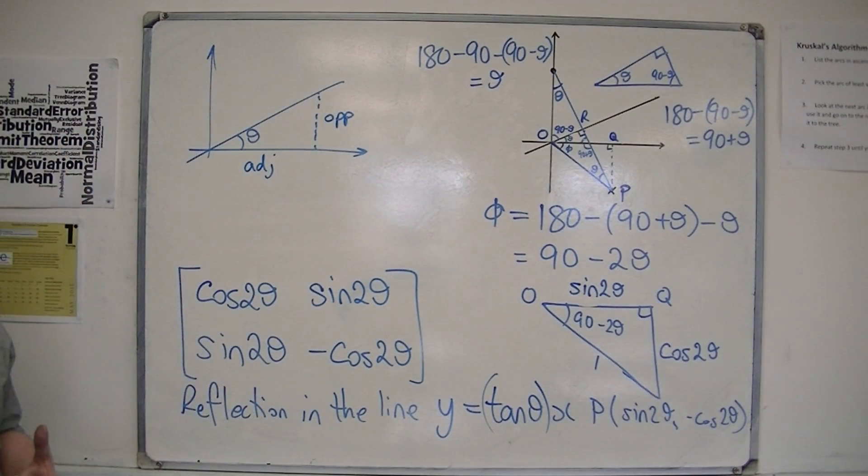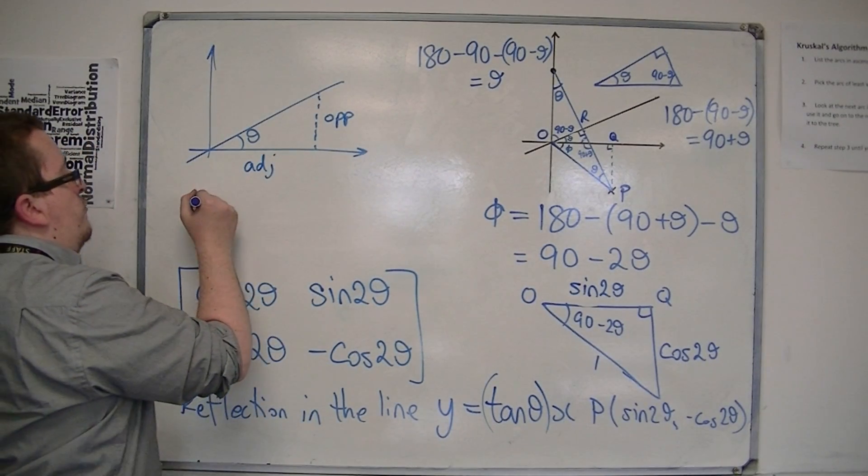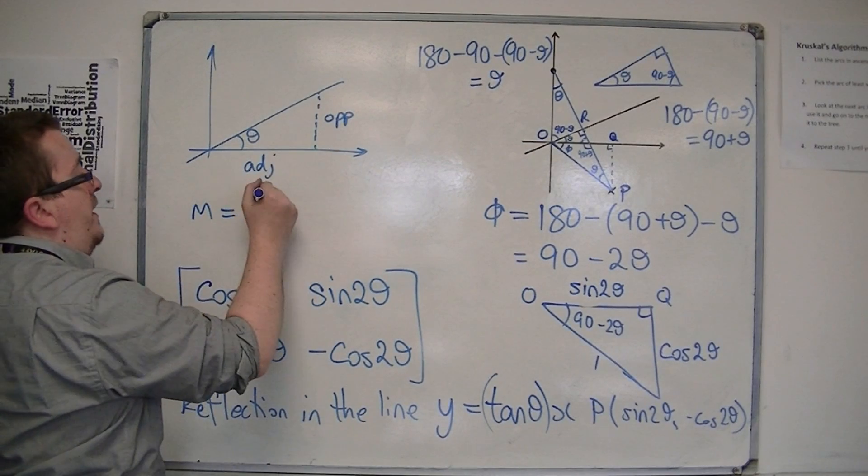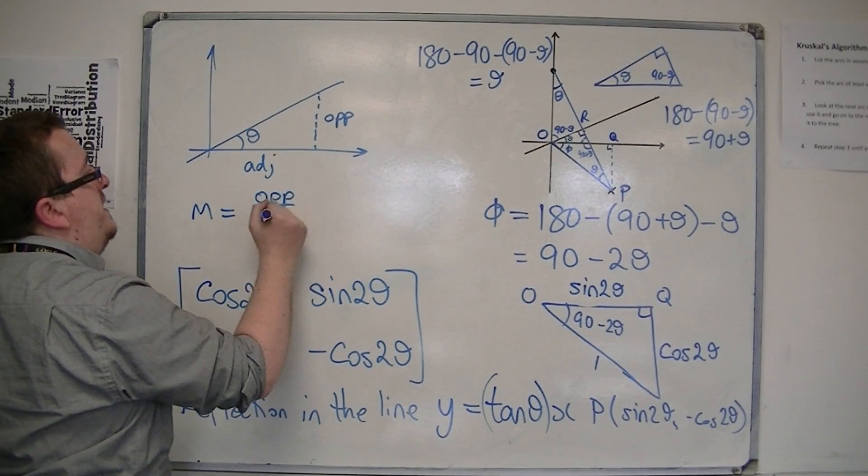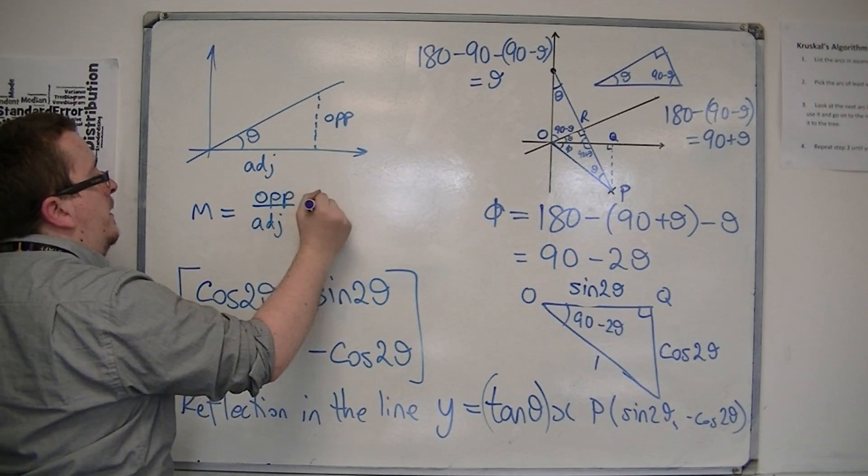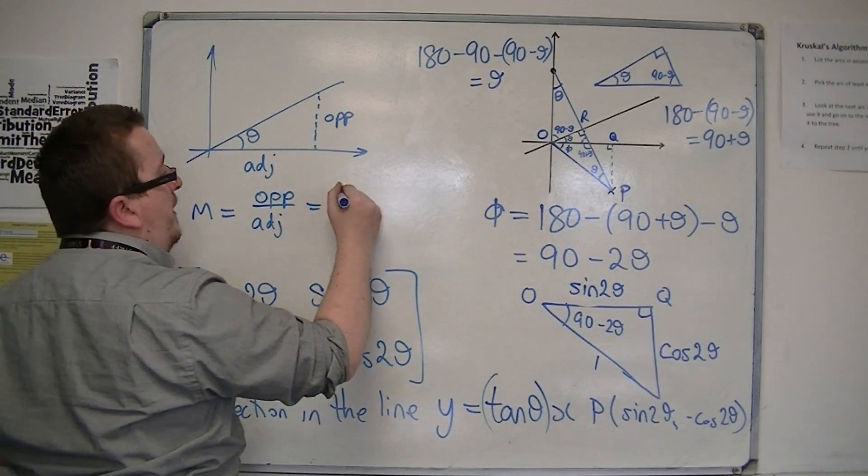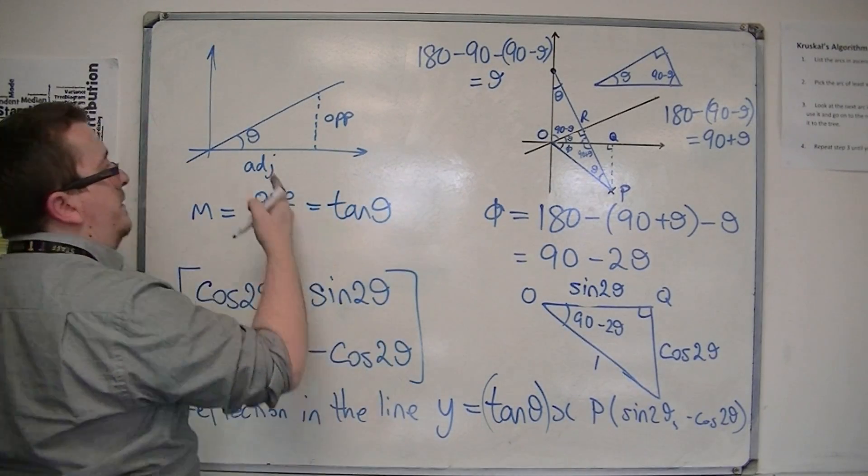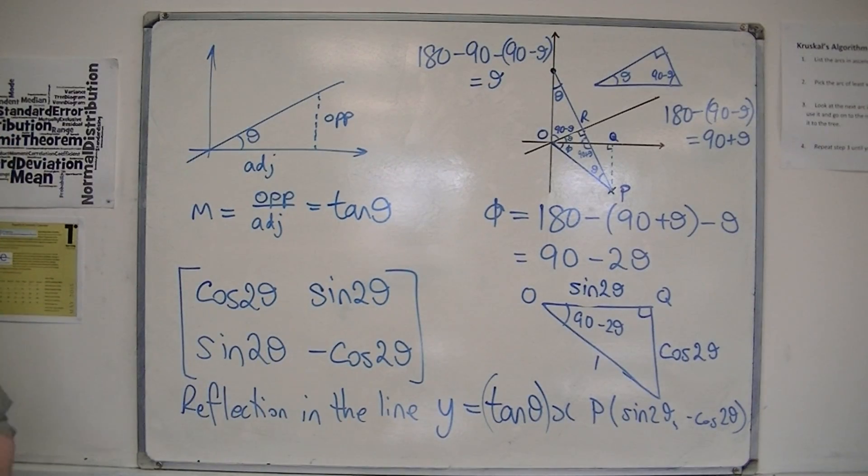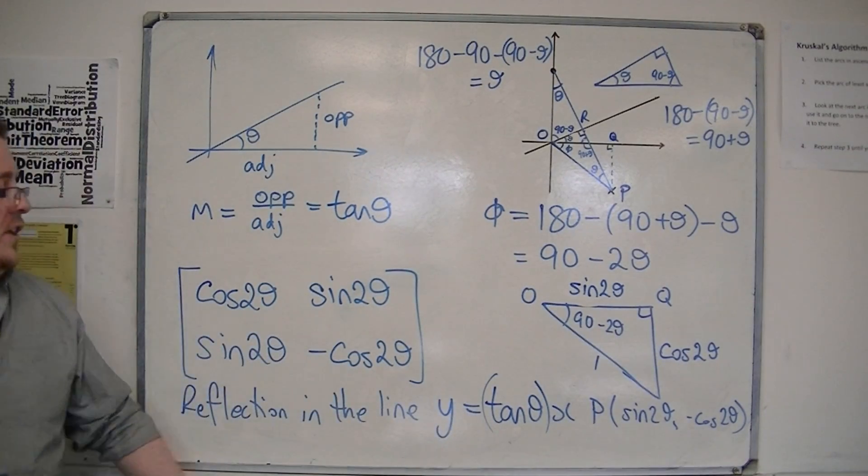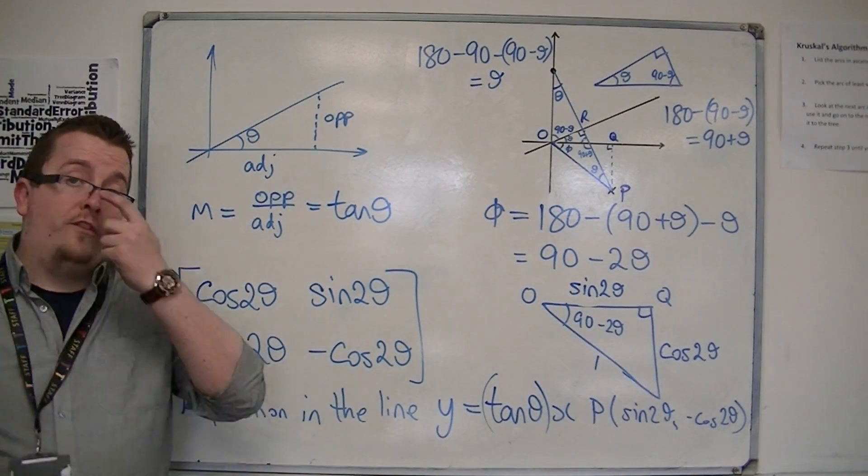So the gradient of that line is the opposite divided by the adjacent, but what do we know to be opposite over adjacent? Well, that's tan of theta, the angle. So it's tan theta x is the equation of the line that we are reflecting in.